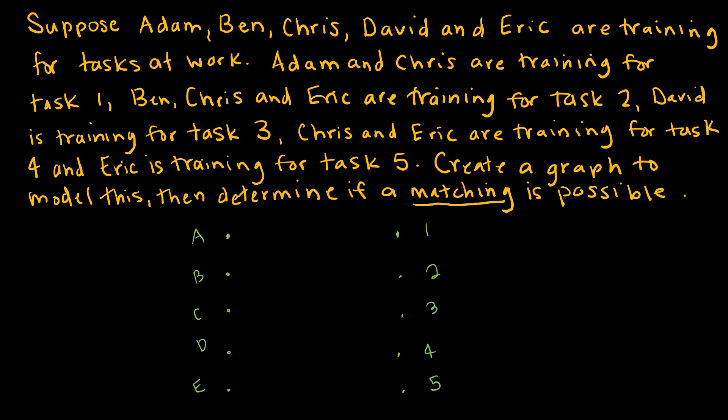Adam and Chris are training for 1. So Adam, Chris, training for 1. Ben, Chris, and Eric are training for 2. So Ben, Chris, and Eric are training for 2. David is training for 3. Chris and Eric are training for 4. And Eric is training for 5. So if I were just modeling this with a graph, I am done.